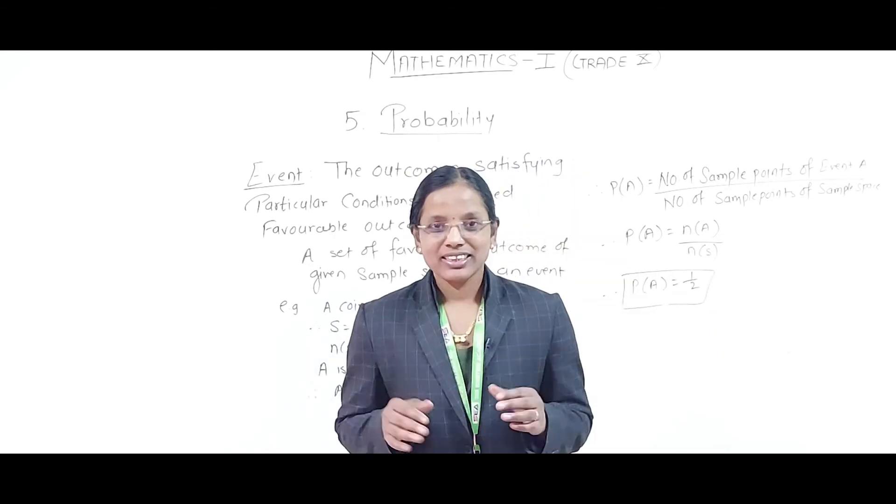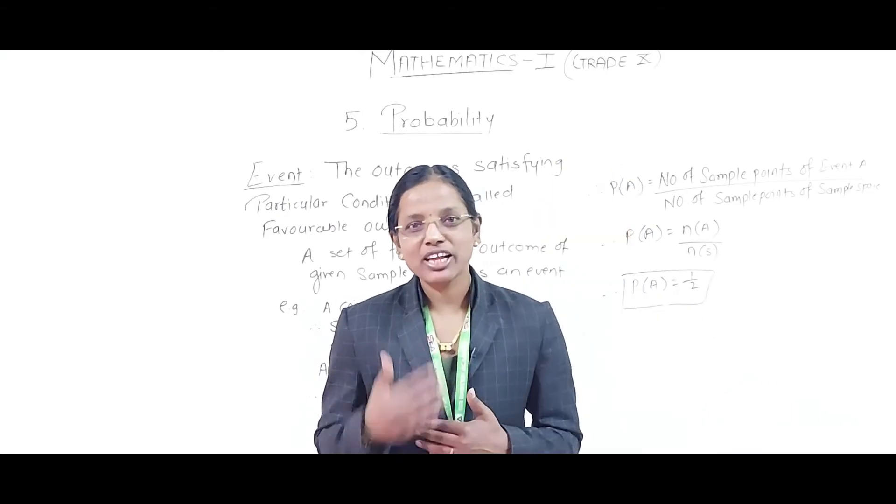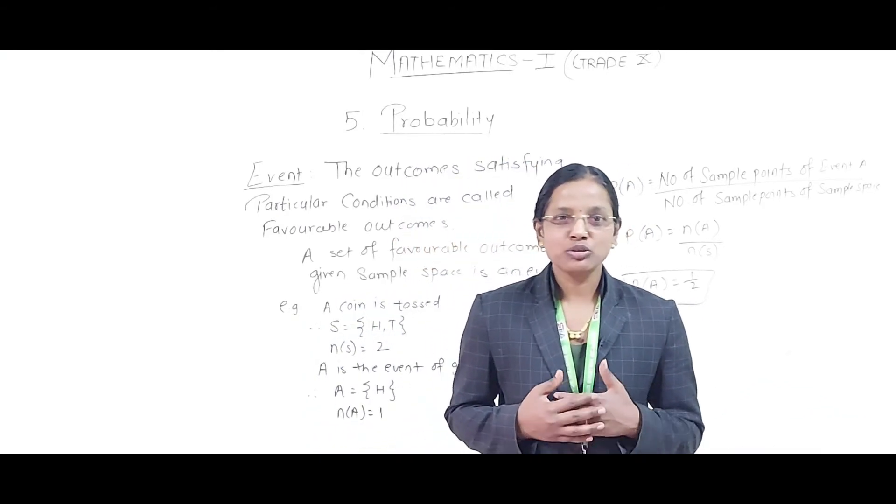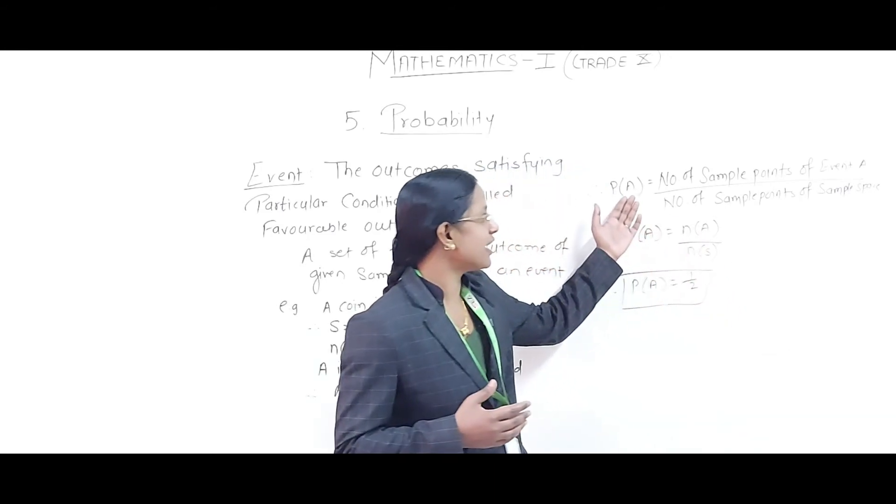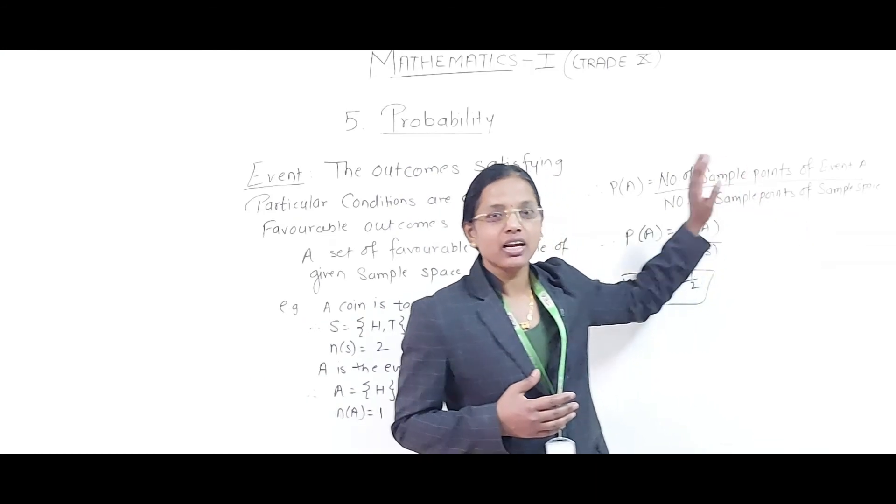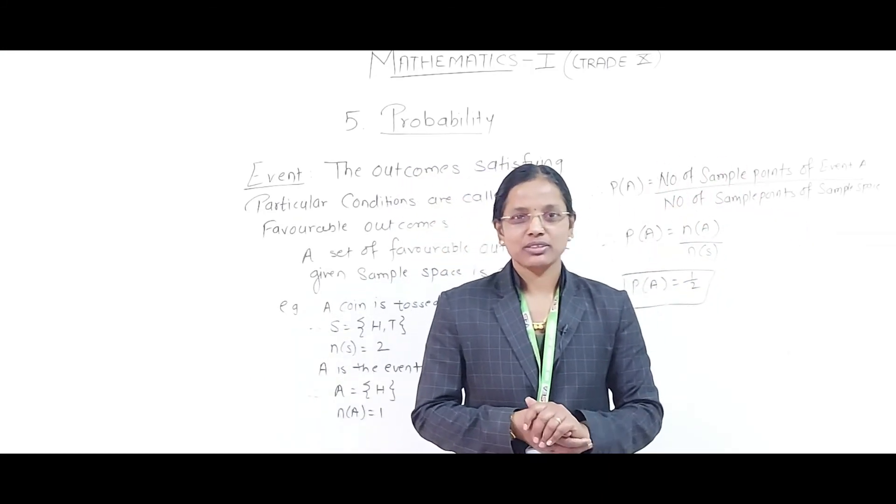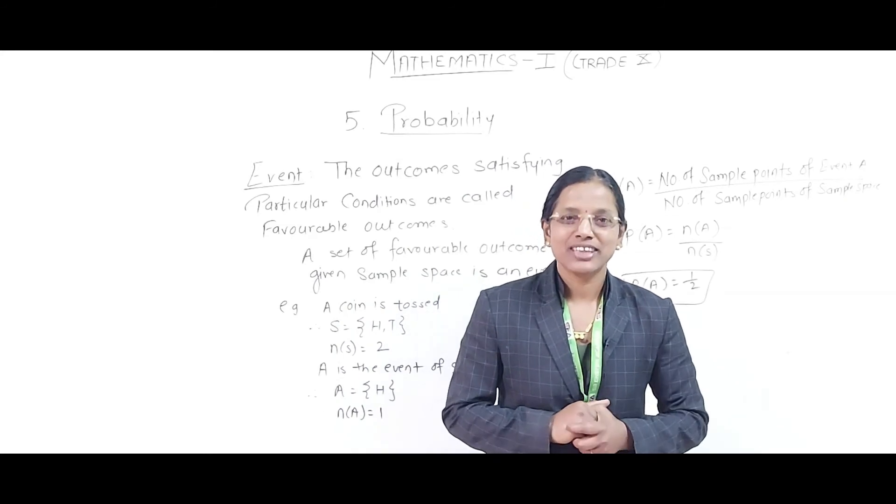In this way, we can find the probability of innumerable events. This is one of the well-scoring chapters, using only one formula: probability of event = number of sample points in event A divided by number of sample points in sample space. Hope you understood. Thank you very much.